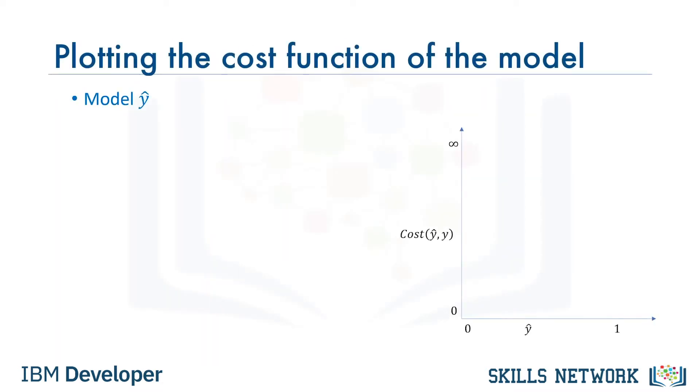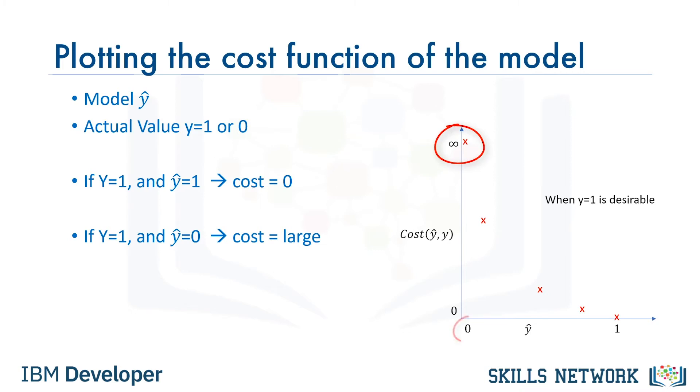Recall that our model is y-hat. Our actual value is y, which equals zero or one, and our model tries to estimate it as we want to find a simple cost function for our model. For a moment, assume that our desired value for y is one. This means our model is best if it estimates y equals one. In this case, we need a cost function that returns zero if the outcome of our model is one, which is the same as the actual label. And the cost should keep increasing as the outcome of our model gets farther from one. And cost should be very large if the outcome of our model is close to zero.